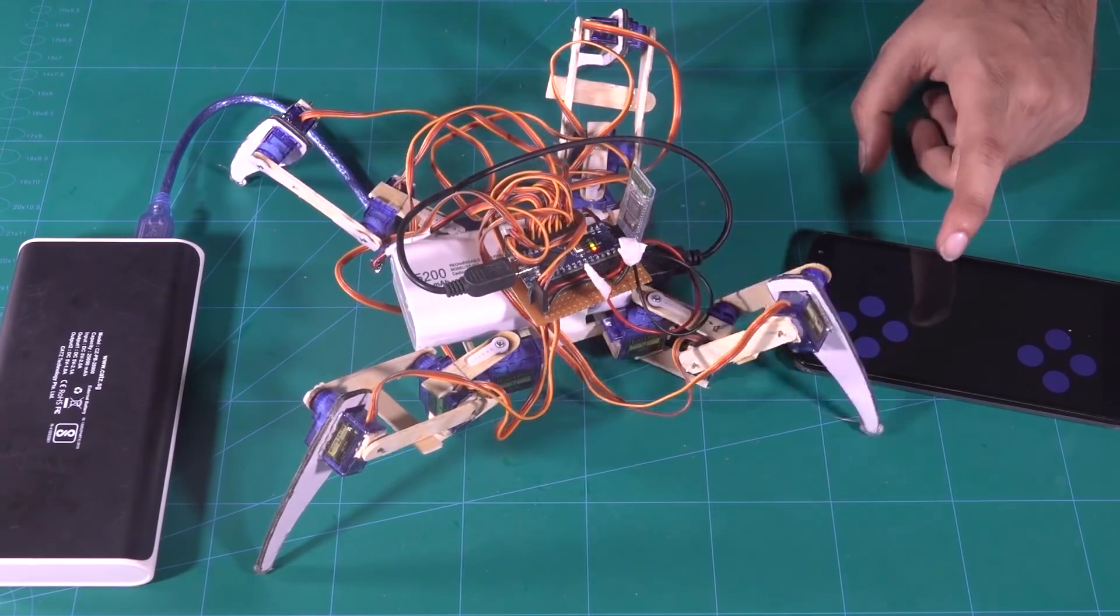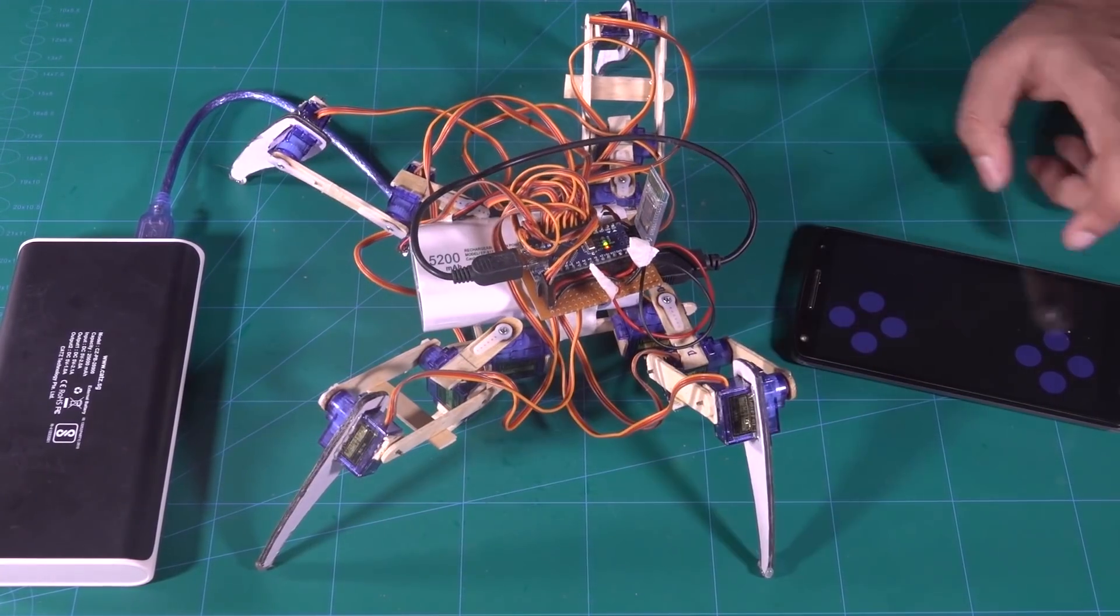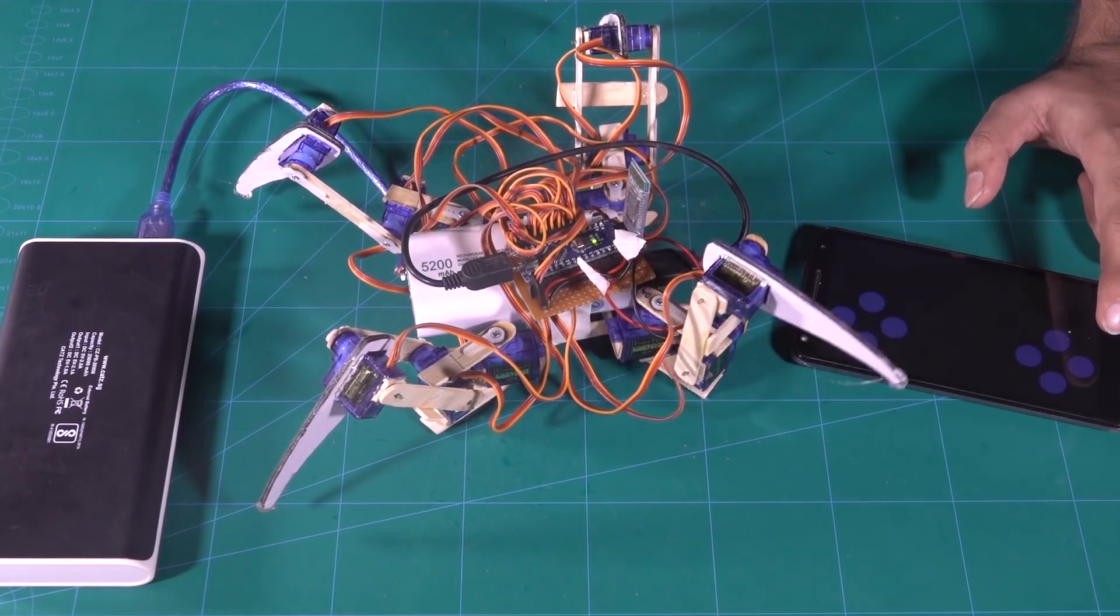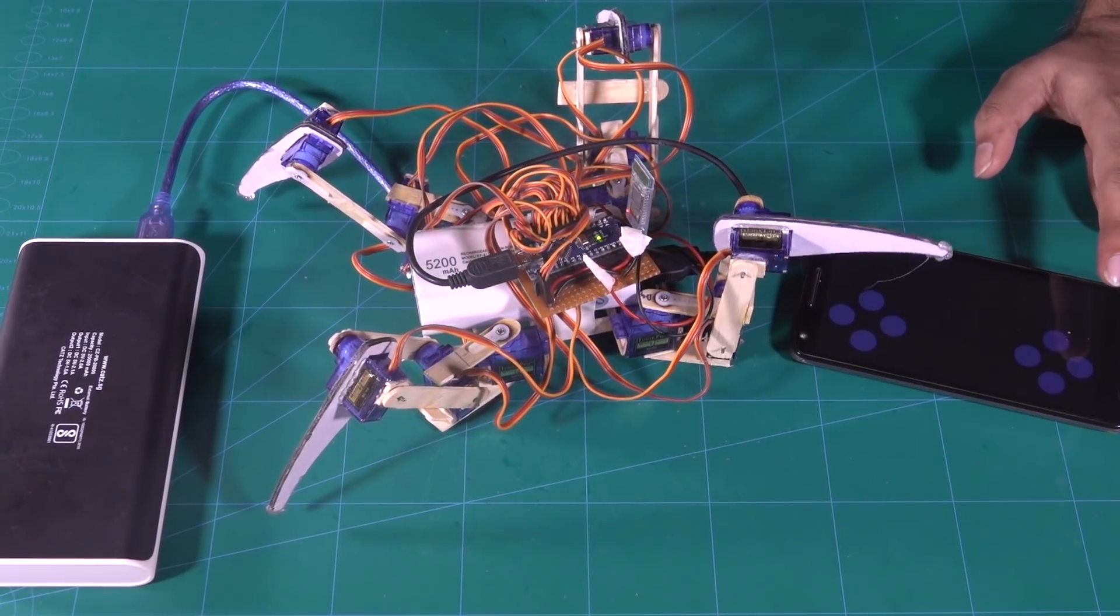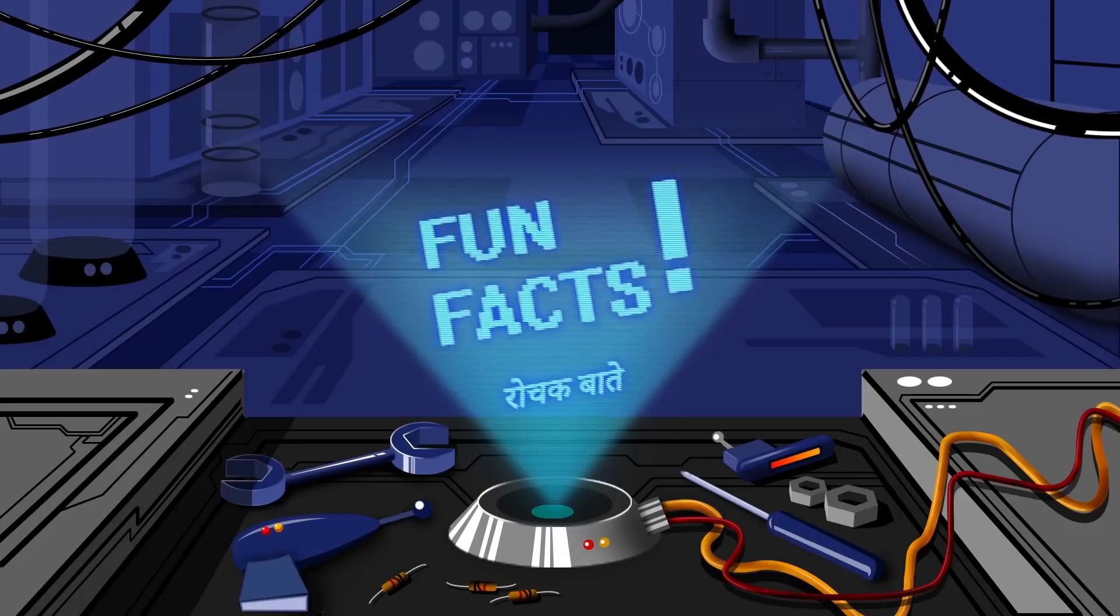When you press a button on the phone, a signal is sent from the phone to the Arduino via Bluetooth. According to the button pressed, a sequence of commands are sent to the servos, allowing them to move in a specific direction.